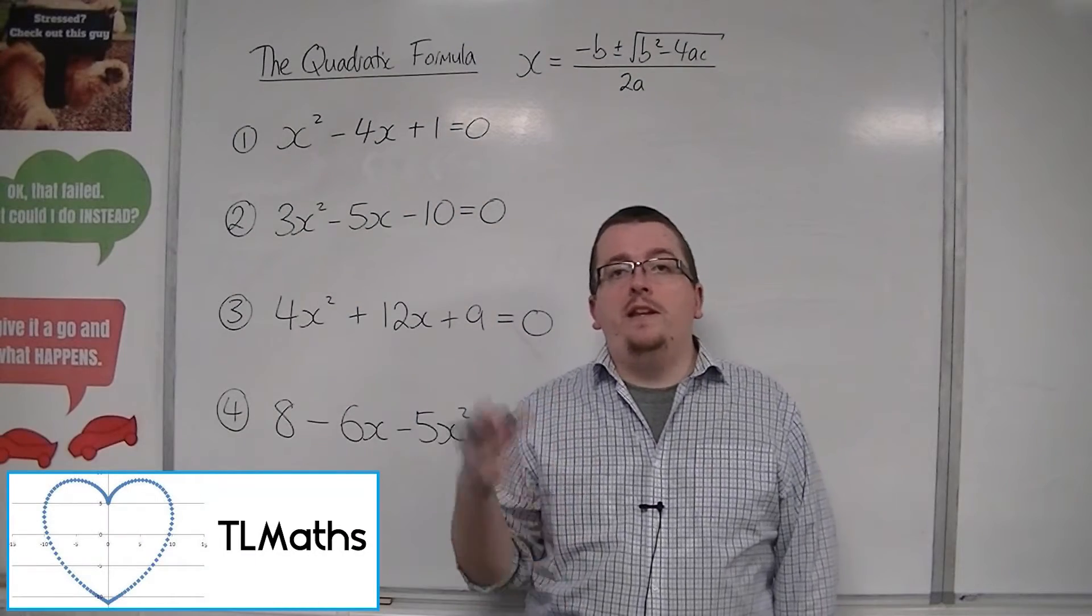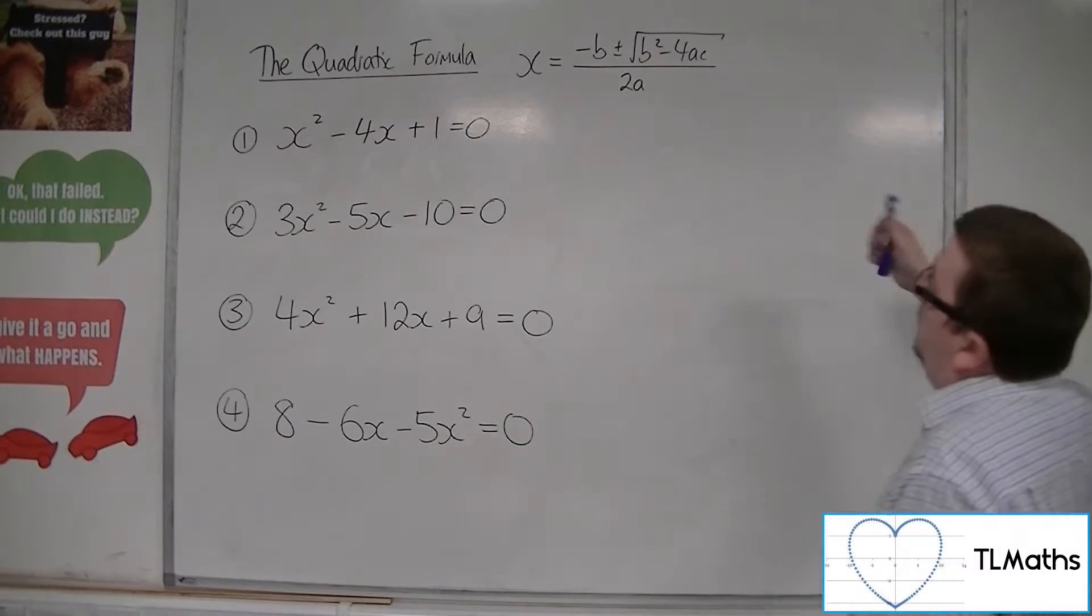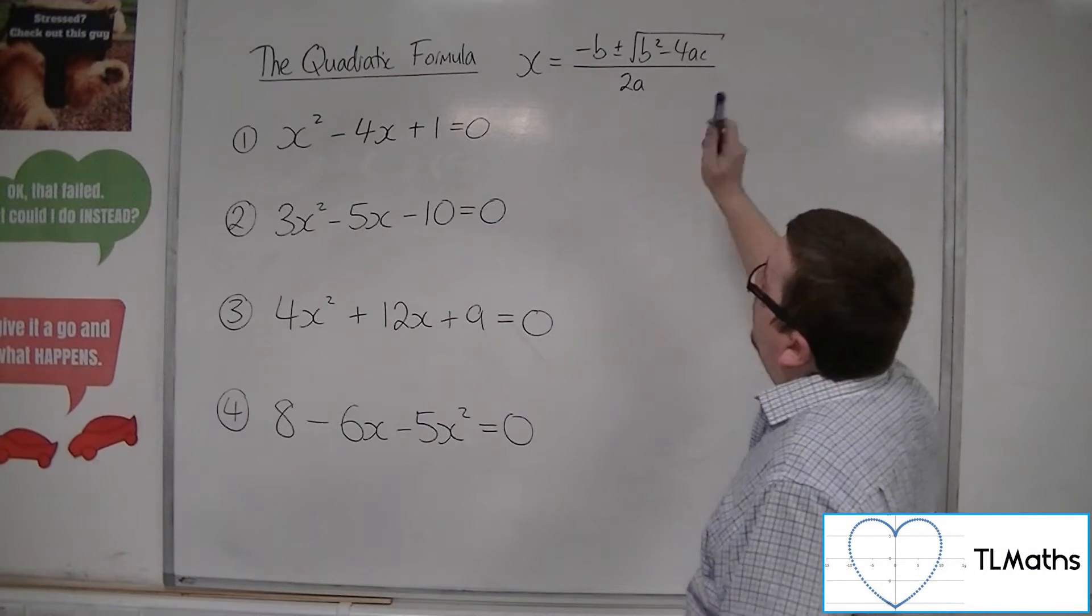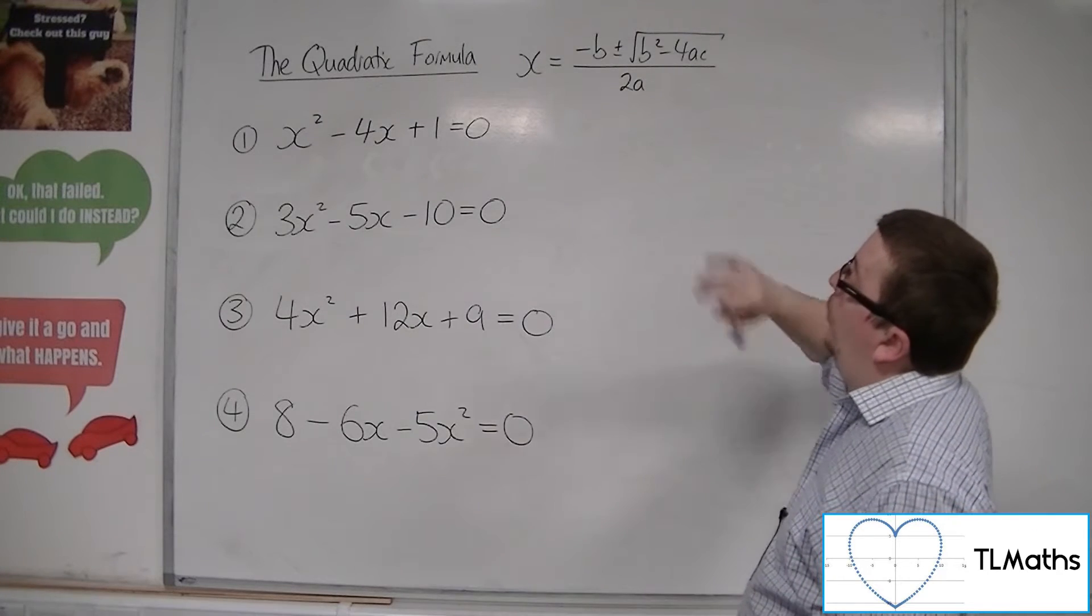Now we need to be proficient in using the quadratic formula. So the quadratic formula reads: x equals minus b plus or minus the square root of b squared minus 4ac, all over 2a.